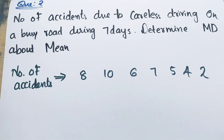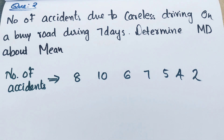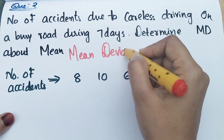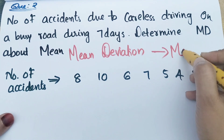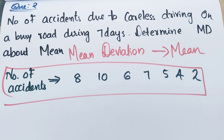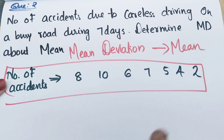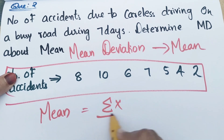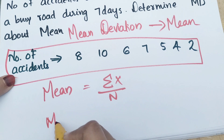Then next, the 4-mark question. Number of accidents due to careless driving on a busy road during 7 days follows. Determine MD about mean. MD means mean deviation about mean. We take mean deviation. These are the values — this is the individual series. We have 2 equations: we take the mean equation, that is sigma x by n, and the mean deviation equation.